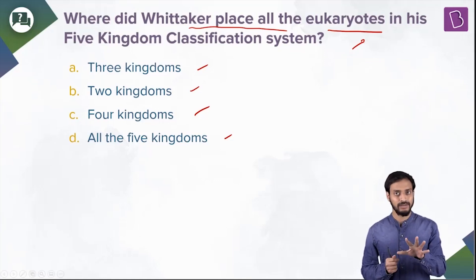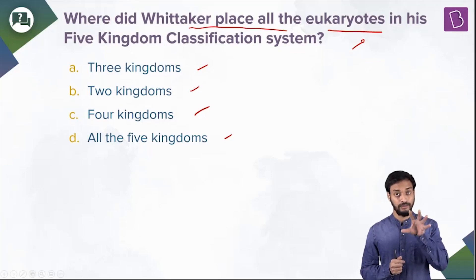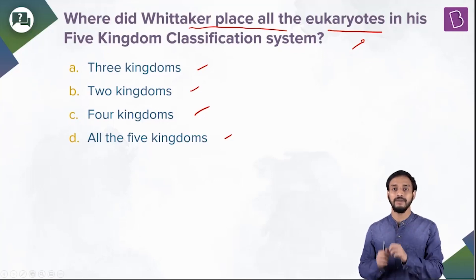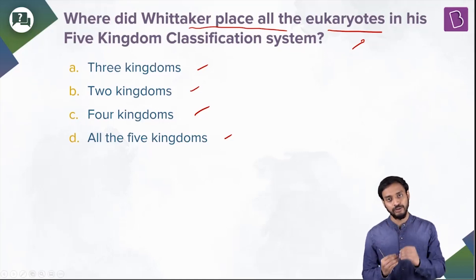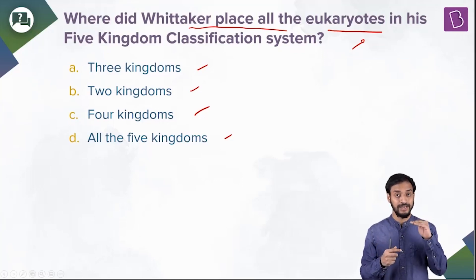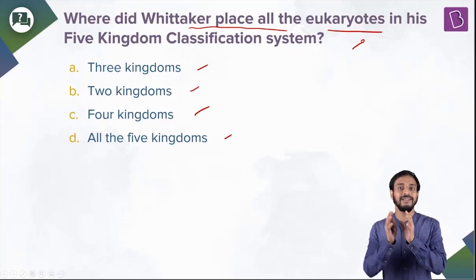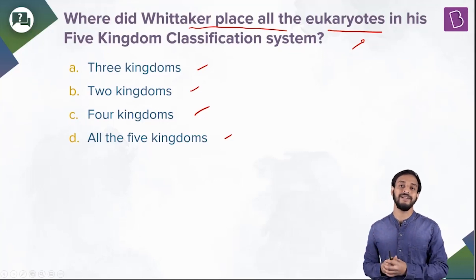Based on that five kingdoms, what are they? Kingdom Monera, Protista, Fungi, Plantae, Animalia. Now if we talk about evolution, this is the direction in which evolution happened — prokaryotes, that is Monera, then Protista, then Fungi, Plantae, Animalia.